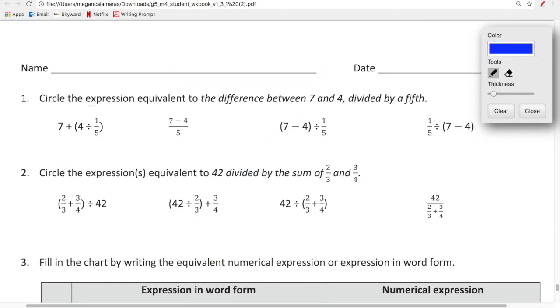So circle the expression. When we see expression we know it's only going to be one of these four problems. Equivalent to the difference. So difference means subtraction between seven and four. So that's seven minus four divided by a fifth. So one fifth. So we have to see which one is equal to seven minus four divided by one fifth. We do this through the process of elimination.